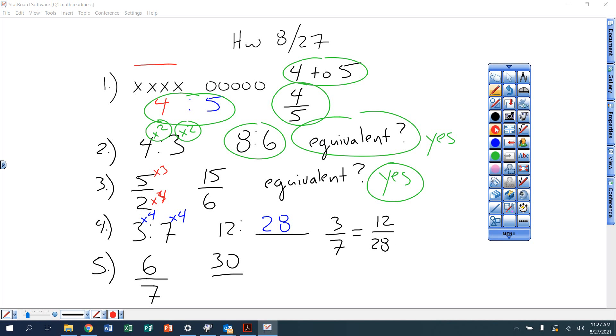All right, another one: 6 over 7. So figure out what you're doing to 6 to get that 30. Looks like I'm multiplying it by 5. To keep that equivalent ratio, I'm going to multiply the bottom number by that same 5, gives me the fraction 30 over 35. 6 to 7 is equivalent to 30 to 35.